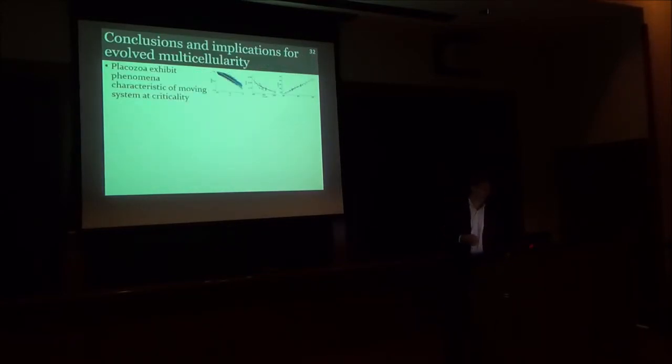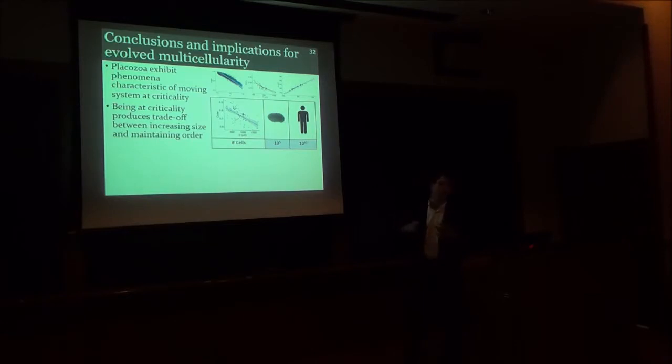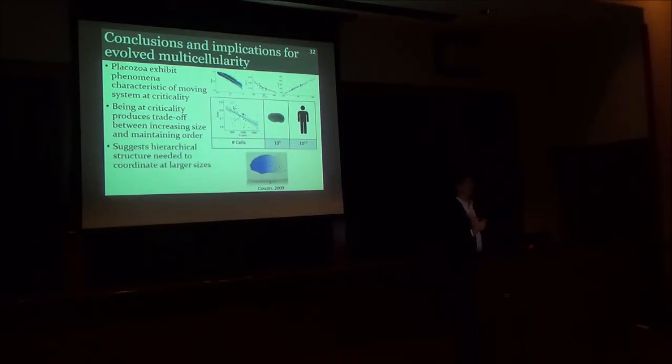As a conclusion for this section, what I find is that Placozoa exhibit phenomena characteristic of a moving system tuned to criticality, but being at criticality in such a decentralized multicellular sheet creates problems for maintaining collective order. And we saw this size effect on collective order within the Placozoa, even at their relatively small sizes of 10,000 cells or so. We can then imagine how this phenomenon could affect a decentralized system that is the size of a human being, which is orders of magnitude bigger in cell count. These results suggest that as animals are evolutionarily driven to become bigger for the advantages that I mentioned earlier, there was a need to coordinate at these larger sizes. And this suggests that you can't get this done in a decentralized fashion. And instead, you need to evolve hierarchical systems of coordination, such as a central nervous system.